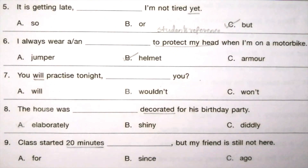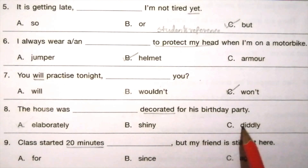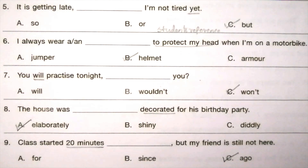Question 7: You will practice tonight, ___ you? 'Will' is the keyword. Options: will, wouldn't, won't. The answer is C — 'won't'. Question 8: The house was ___ decorated for his birthday party. Options: elaborately, shiny, diddly. The answer is A — 'elaborately'. Question 9: Class started 20 minutes ___ but my friend is still not here. 'Started 20 minutes' is the keyword. Options: for, since, ago. The answer is C — 'ago'.